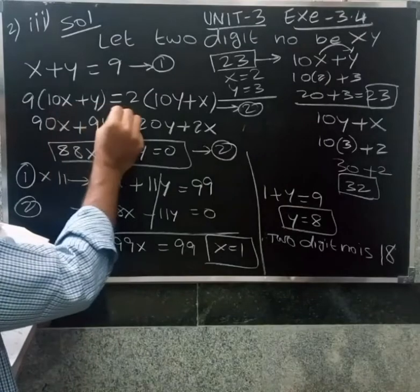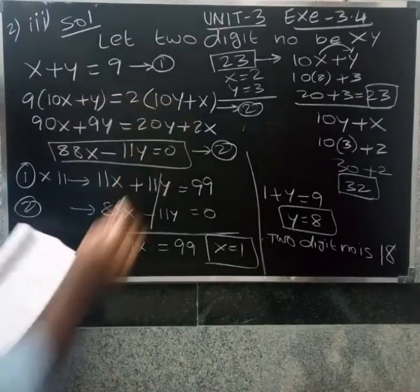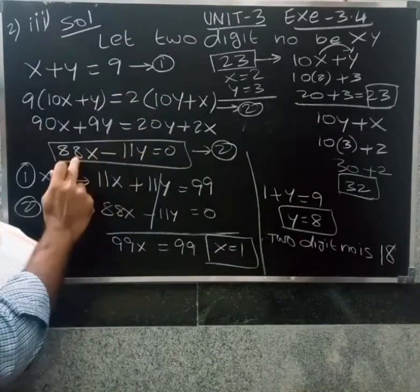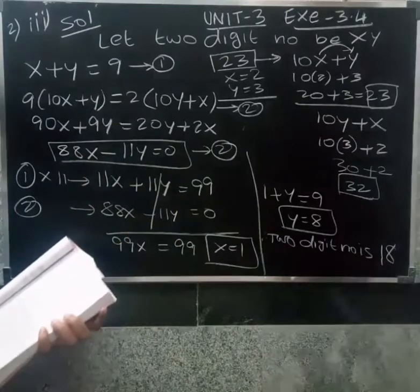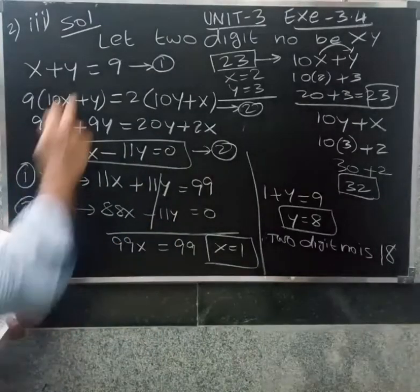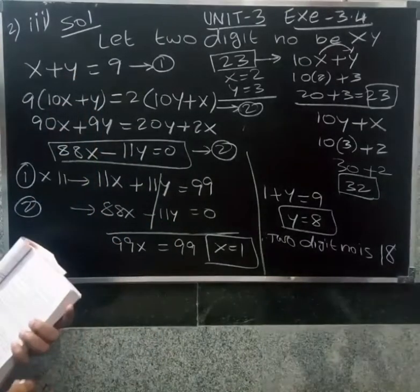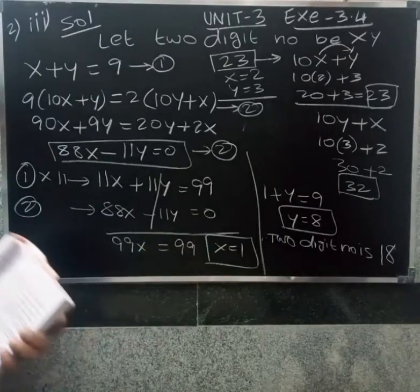Nine times this number equals twice into 10y plus x. This gives 88x minus 11y equals 0. Using the elimination method on the two equations, we get 99x equals 99, so x equals 1.